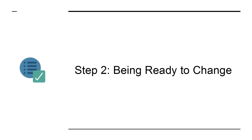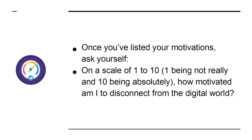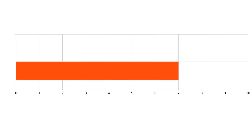Step 2: Being Ready to Change. Once you've listed your motivations, ask yourself: on a scale of 1 to 10 — 1 being not really and 10 being absolutely — how motivated am I to disconnect from the digital world? If your score is under 5, it might not be the right time for you. You have an opportunity to reconsider your motivation and also the timing. A score above 6 is more likely going to lead you to success.